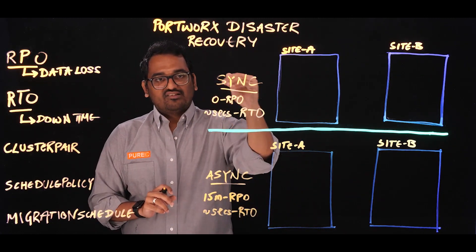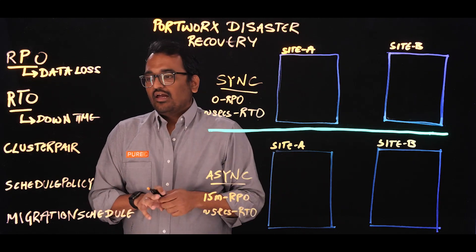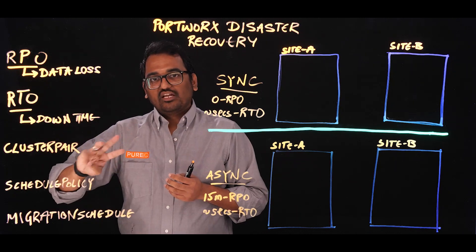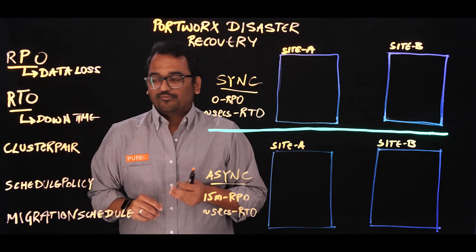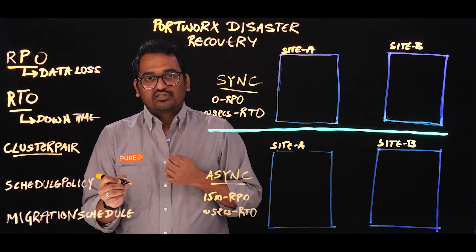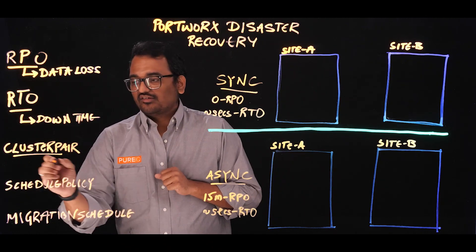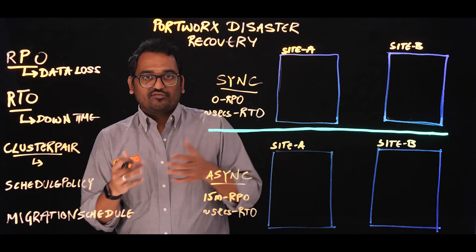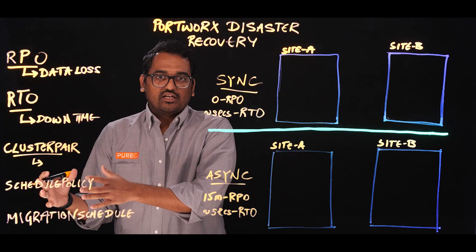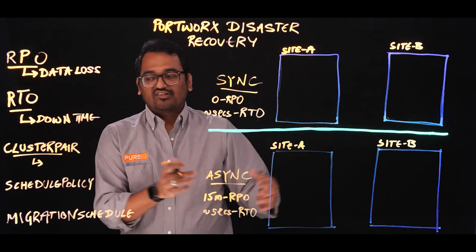That's the difference between synchronous and asynchronous disaster recovery solutions. Before we talk about how Portworx helps you build these solutions, let's cover three terms we'll use through this video. The first one is cluster pair. A cluster pair is a trust relationship between your primary and your secondary Kubernetes clusters, which helps you — in case of a disaster event — take all the application resources and application data running on the primary site and bring them online on the secondary site.